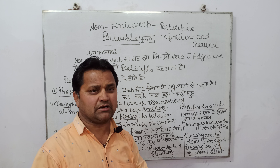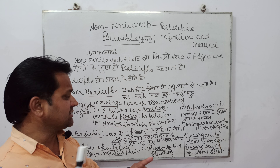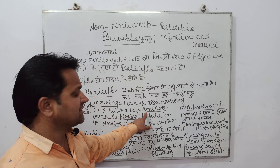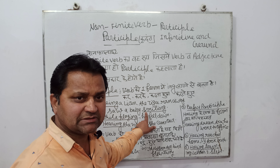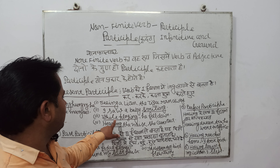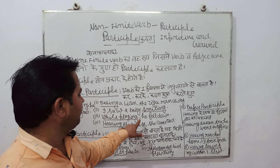I saw a baby smiling. Maine ek bachche ko muskuraate hue dekha. Muskuraate hue — smiling. Here, smiling is present participle.